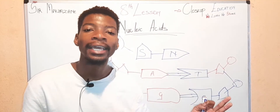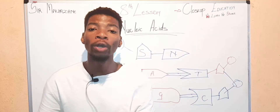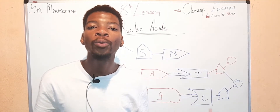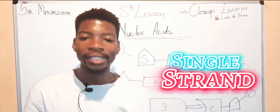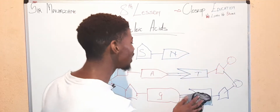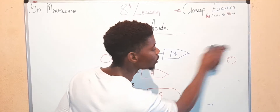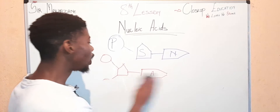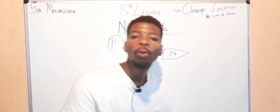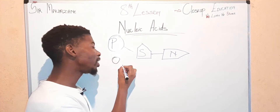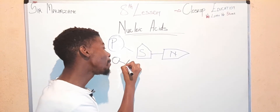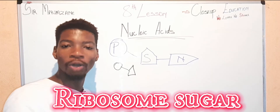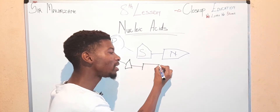DNA and RNA have three similar nitrogenous bases, but DNA has two strands. RNA consists of a single strand, meaning it is not connecting with any other strand. So let's start from the beginning: RNA also has a phosphate group, then the ribose sugar — it consists of the ribose sugar, not the deoxyribose sugar — then the nitrogenous bases, starting with adenine.